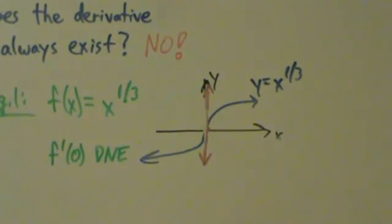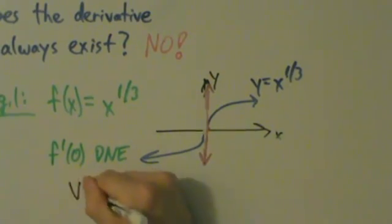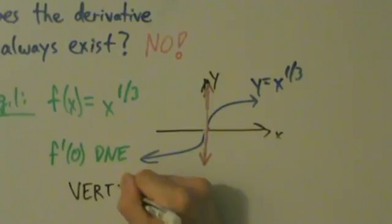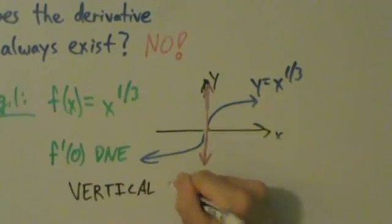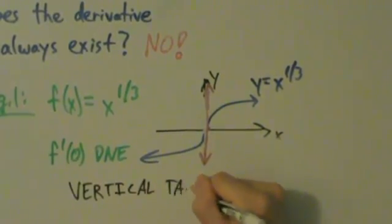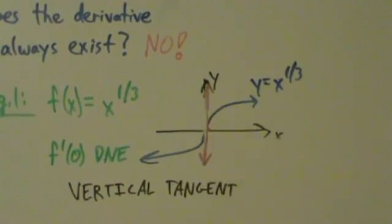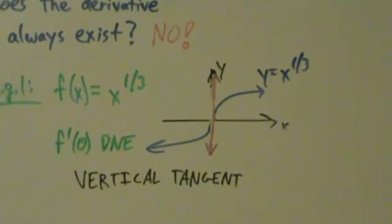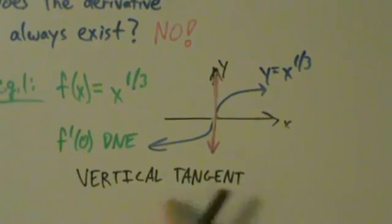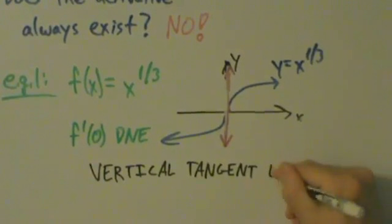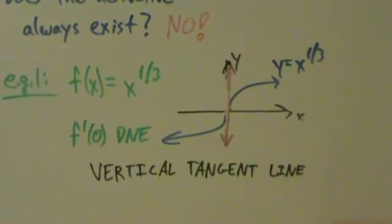So the derivative at x = 0 is undefined — it doesn't exist. If you have a vertical tangent line, then your derivative is not going to exist. So that's one way: a vertical tangent line means the derivative doesn't exist. That's the first way.